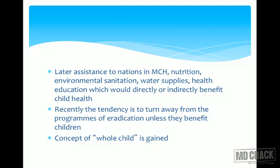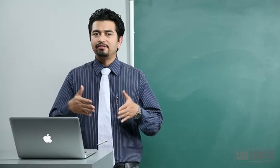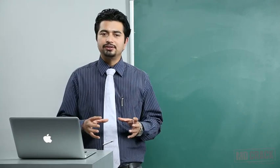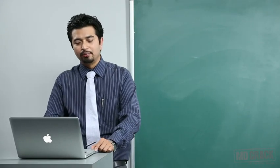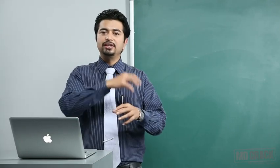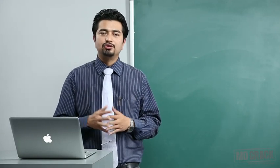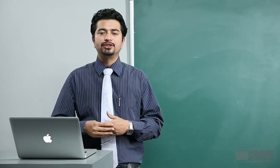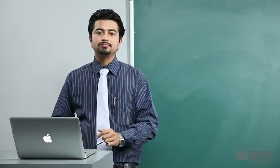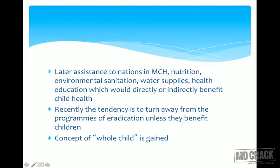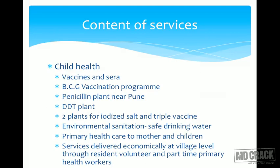Recently, since UNICEF is basically a child health organization, the tendency is to turn away from programs of eradication unless they benefit children, as these programs take up a lot of resources with limited results. UNICEF later expanded to take up measures protective for children — environmental sanitation, water supplies, and health education — as indirect interventions with a bearing on child health. Now UNICEF focuses on diseases directly related to child health. The concept of the 'whole child' is also embraced — not just pure child health but associated factors impacting child health.